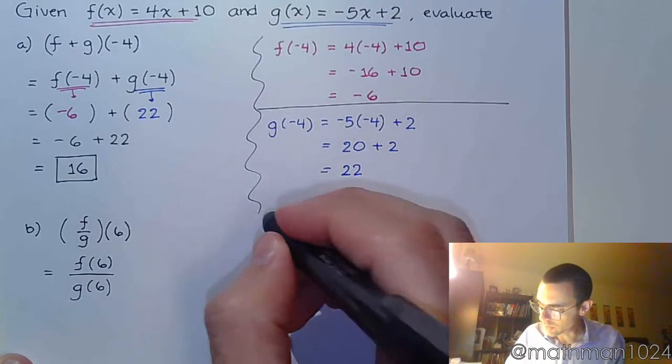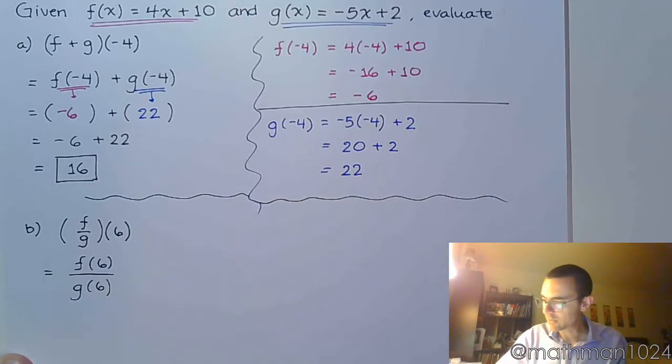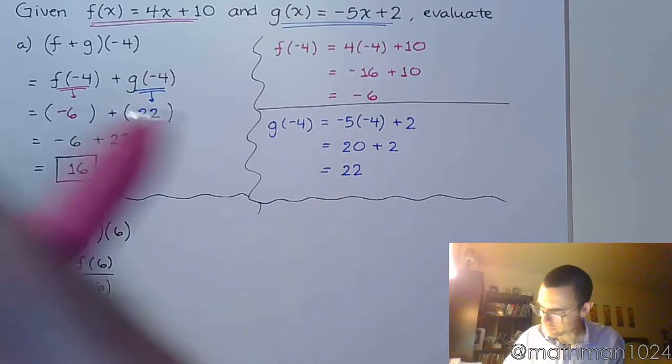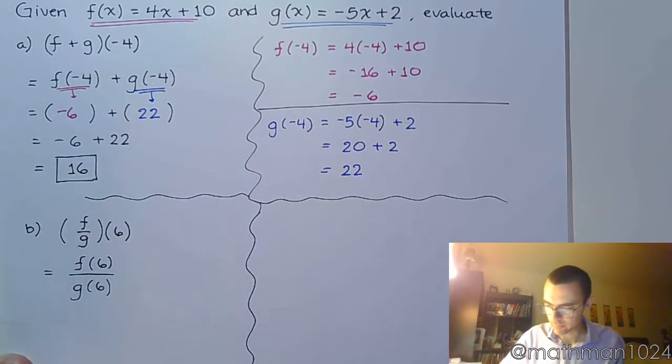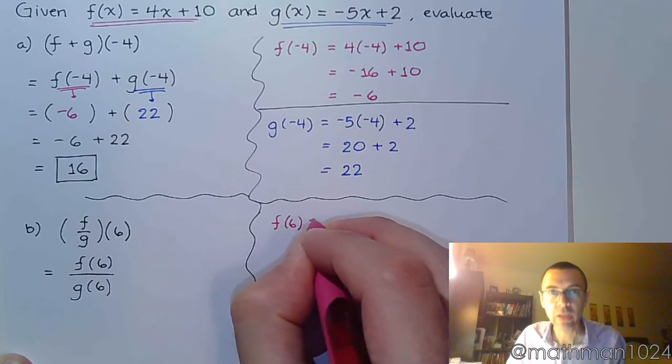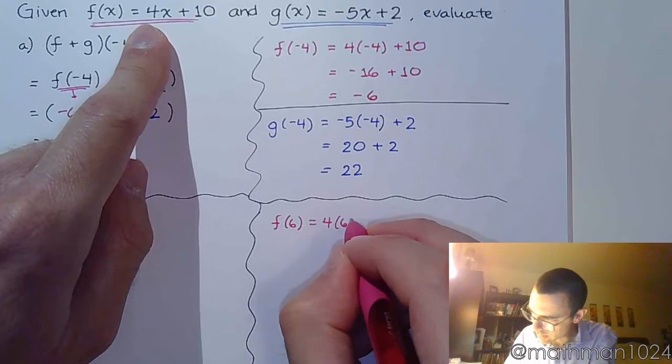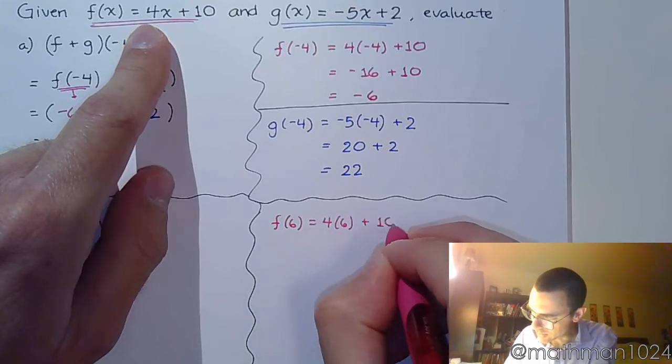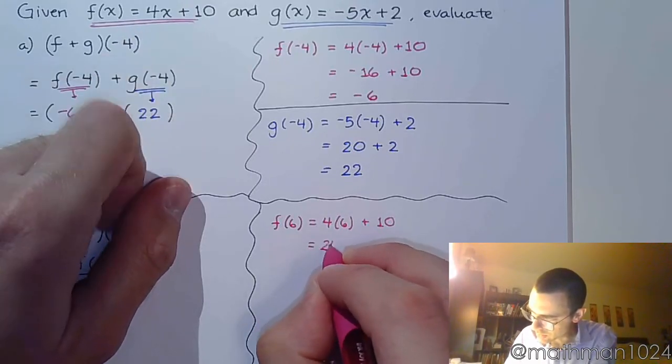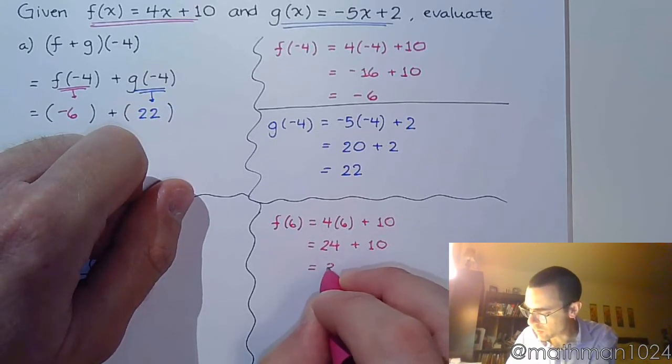So, create some separation here. I need to find f(6). I'm still using the same function f, so that's 4 times 6 plus 10. So, 24 + 10 = 34.